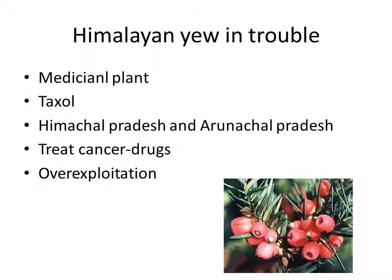Over half of India's natural forests are gone, one third of its wetlands are drained out, 70% of its surface water bodies are polluted, 40% of its mangroves are wiped out, and with continued hunting and trade of wild animals and commercially valuable plants, thousands of plant and animal species are heading towards extinction.